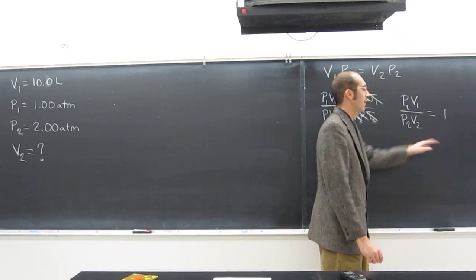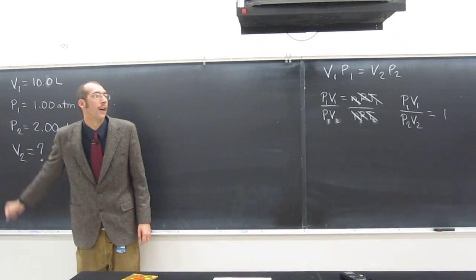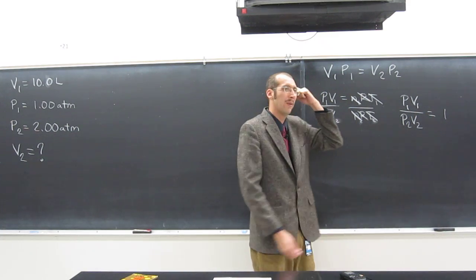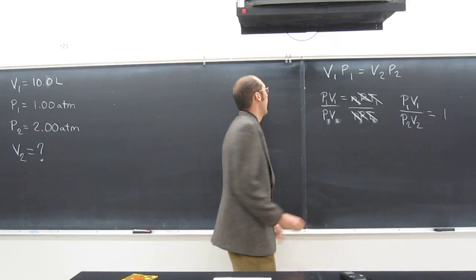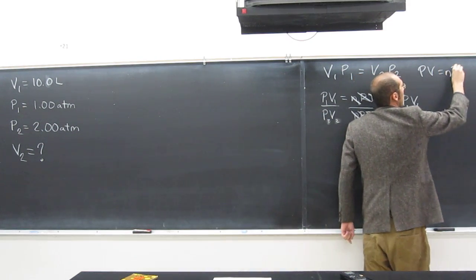But we don't even have to do that, because all we want to do is look for V2, right? So this is the way I like to do problems, because I only have to memorize one thing, right? This one, PV equals NRT.